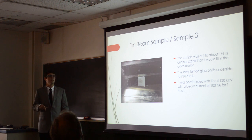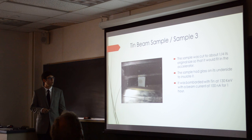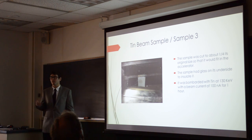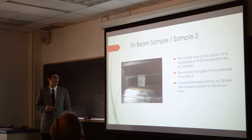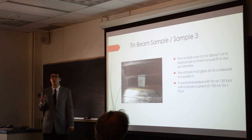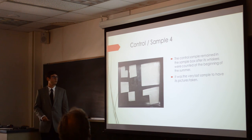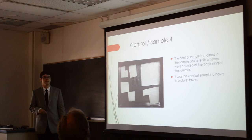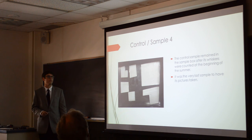The ion beam in this building used 10B as the material. Originally the sample was a little large, so we cut it to a quarter of its size. We put glass underneath it to insulate it, and it was bombarded with 10B at 130 keV for one hour. The control sample stayed in a box for the entire summer — at the beginning of the summer we counted the whiskers, and it was the very last sample to have its whiskers counted.